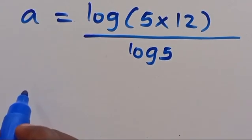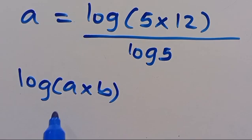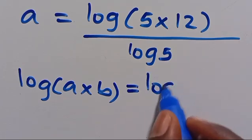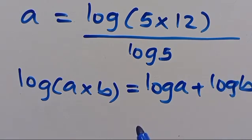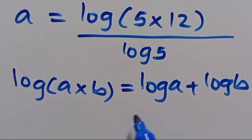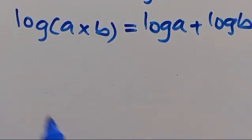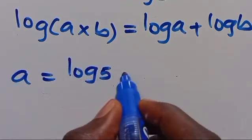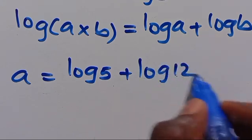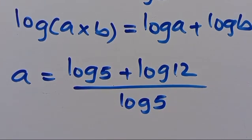Then recall from the law of logarithms that when we have log A times B, such that A and B are constants, we can simplify this as log A plus log B — that is, the multiplication changes to addition. So when we apply it here, we have A equals log 5 plus log 12, divided by log 5.